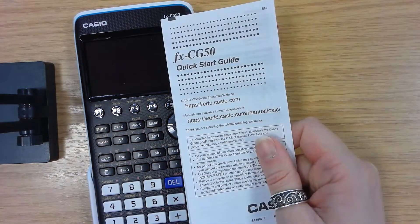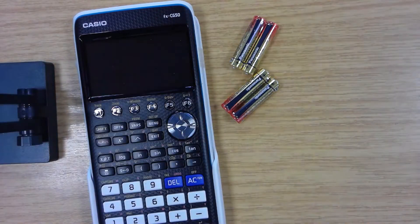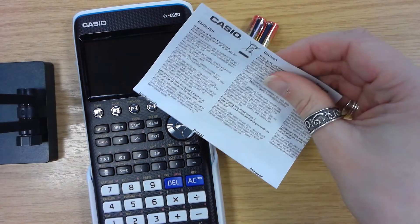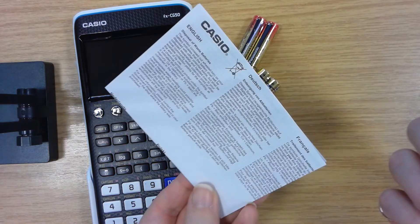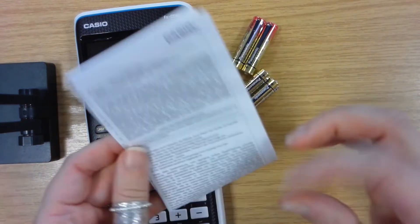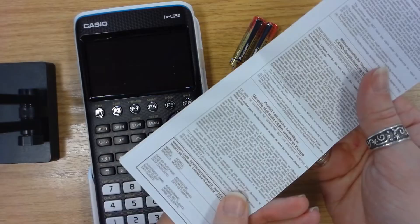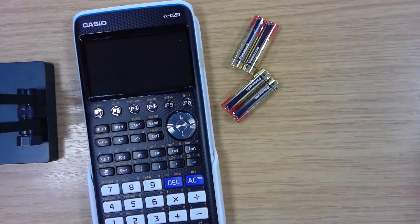You've got your quick start guide that's really handy to go through. You've got here something about how to dispose of stuff that can go in the bin, but also you've got your warranty that's something that might be worth keeping just in case. So put those to one side.